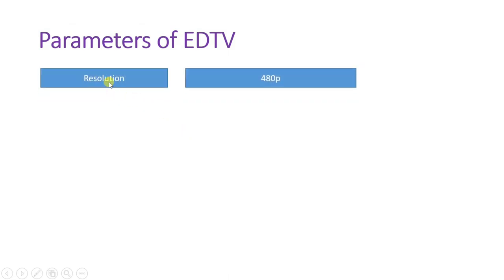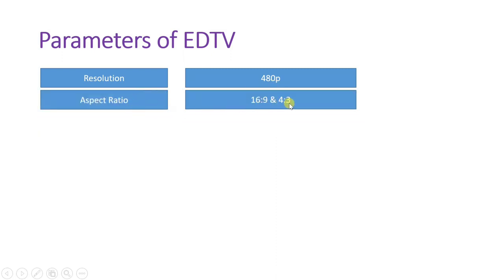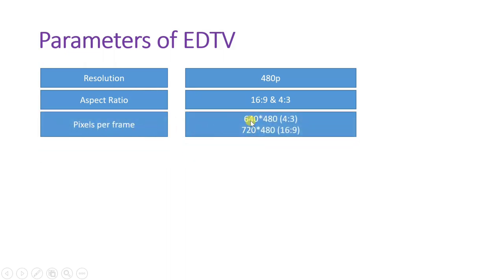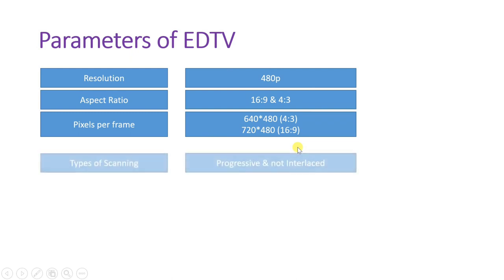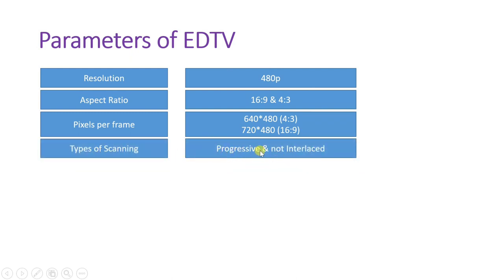Let us look at the different parameters of EDTV. The resolution of EDTV is not changing — it is 480 pixels, but 480p means progressive scanning is used rather than interlace scanning as in PAL and NTSC. The aspect ratio can be 16:9 or 4:3, with pixels per frame being 640×480 for 4:3 and 720×480 for 16:9 aspect ratio. These are the parameters with which EDTV functions, using progressive scanning.